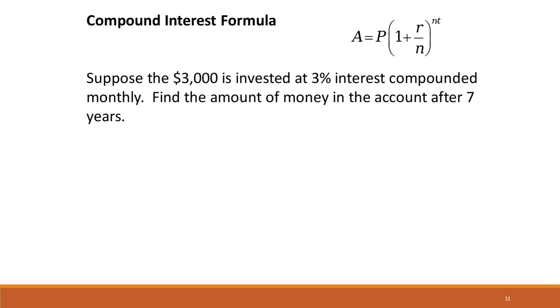So suppose $3,000 is invested at 3% interest, compounded monthly. So $3,000 is our principal here. 3% interest is our rate, and we write that in decimal form, so it's 0.03.